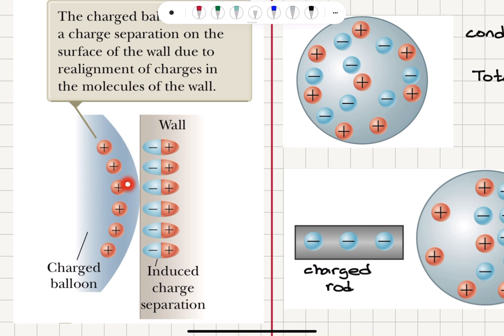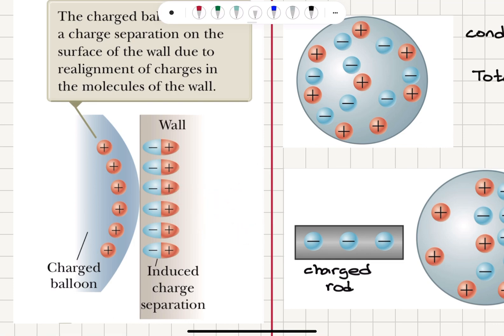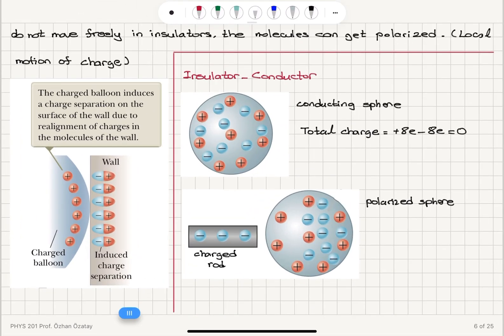Even though charges do not move freely in insulators, the molecules can be locally polarized, so we have local motion of charge. When we bring a charged balloon near a wall, the electrons are not free to move inside the material, but the molecules close to the surface get polarized. There will be an induced charge separation — a net negative charge develops close to the surface, balanced by positive charge away from the surface. This is a local electrification process.